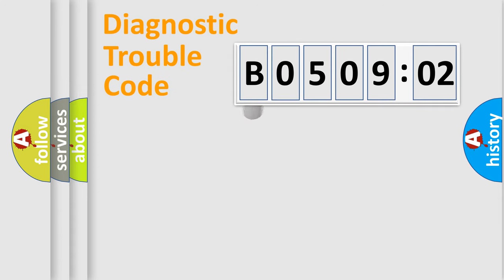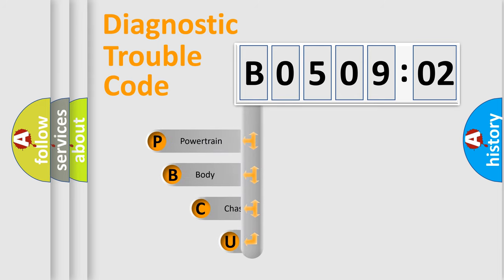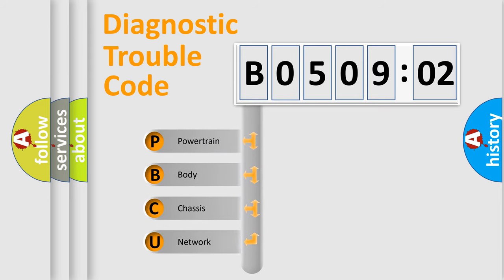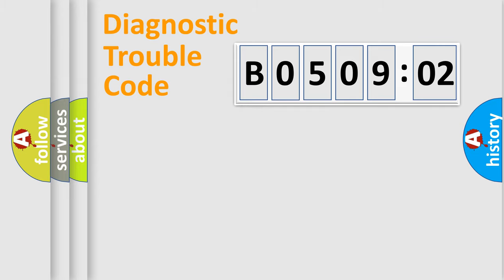First, let's look at the history of diagnostic fault code composition according to the OBD2 protocol, which is unified for all automakers since 2000. We divide the electrical system of the automobile into four basic units: Powertrain, Body, Chassis, and Network.